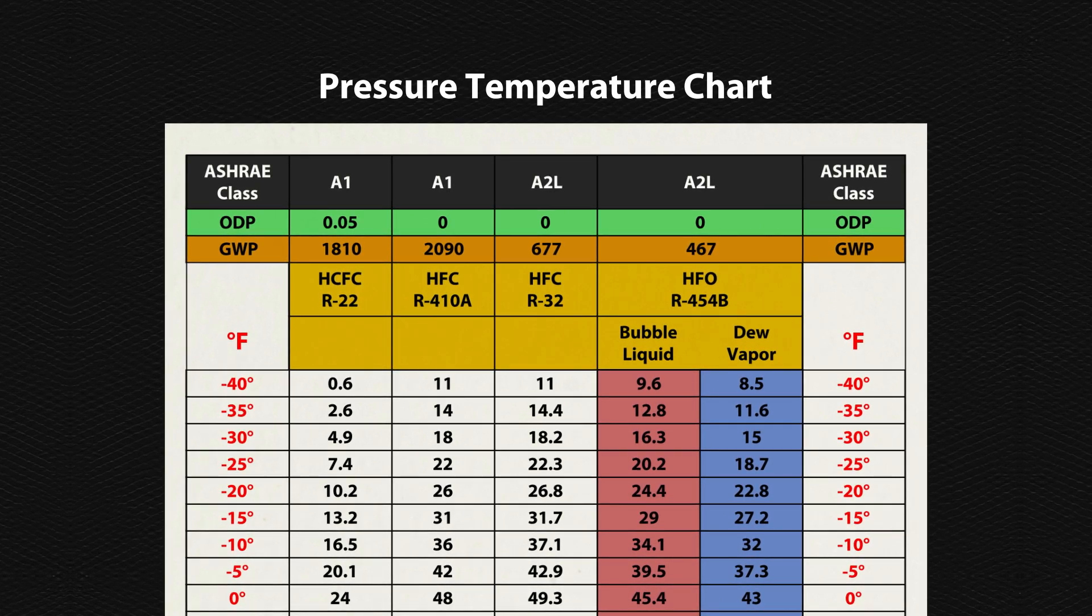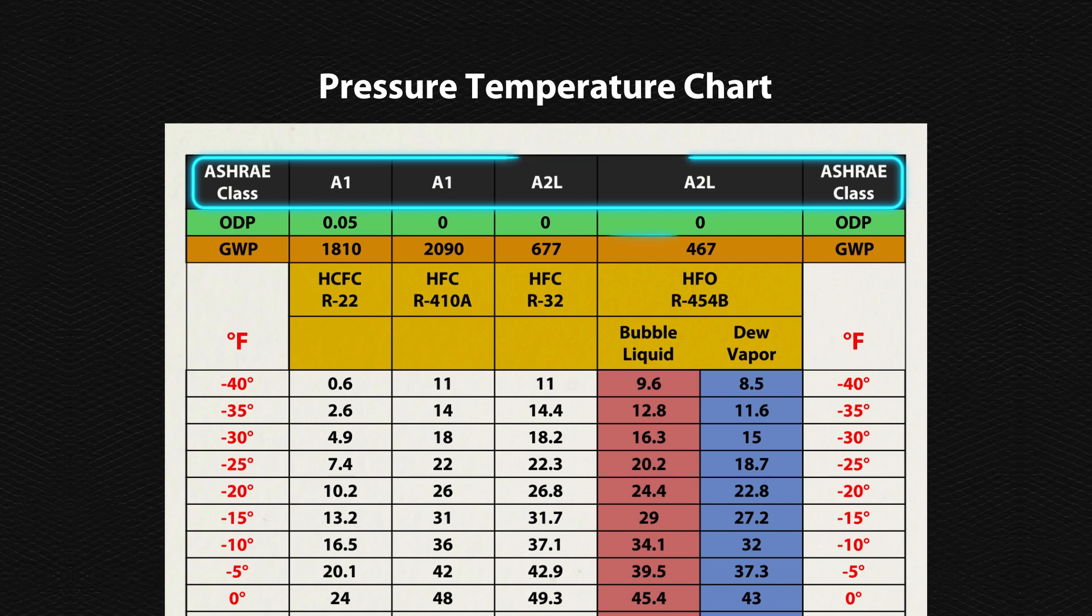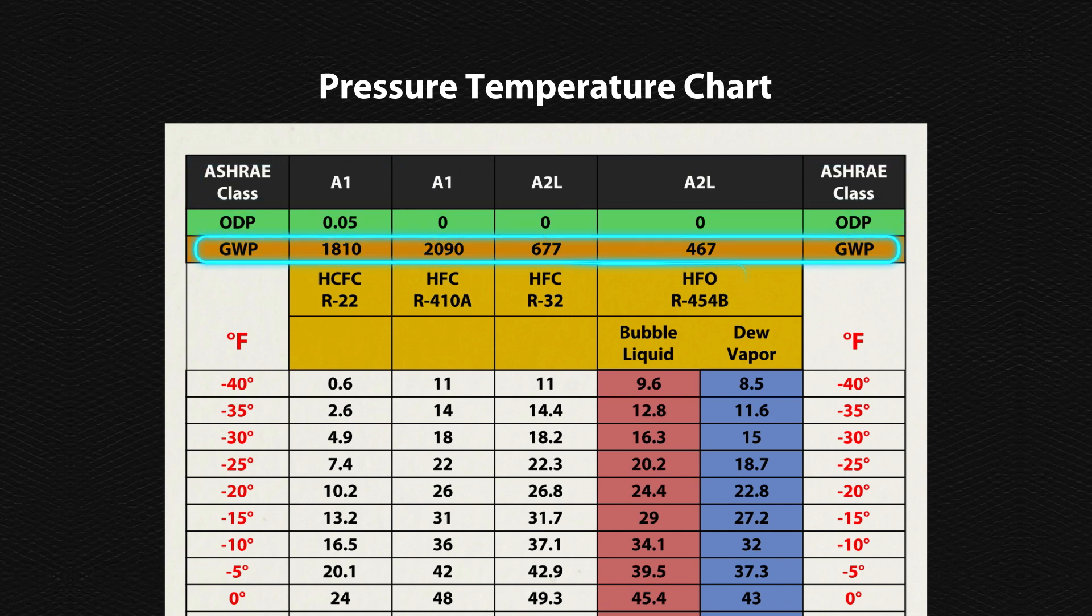PT charts may look different, but the relationship between pressure and temperature will be the same. The PT chart shown shows the ASHRAE classification, ozone depletion potential, global warming potential, the scientific abbreviations of the refrigerant, and the refrigerant name.